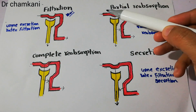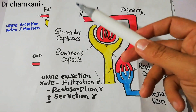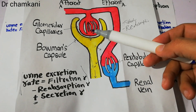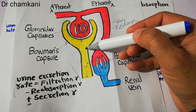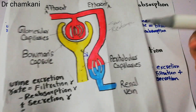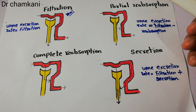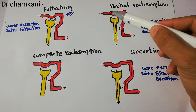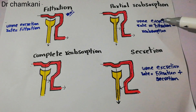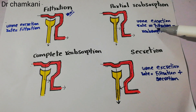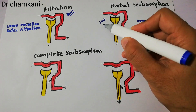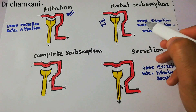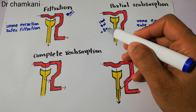If there is partial reabsorption — blood is filtered and some substances are partially reabsorbed from the tubules back into the peritubular capillaries — then the urine excretion rate equals filtration minus reabsorption. For example, if 10 ml of a substance is filtered but 2 ml is reabsorbed, the urine excretion rate will be 10 minus 2, which equals 8 ml.